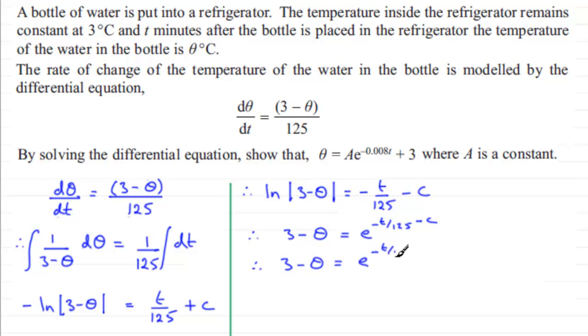And this is exactly the same as (3-θ) equals e to the power (minus t over 125) times e to the power minus c. Remember you would add your indices here when you're multiplying, and that would give me this result up here. Now I can see that I'm getting very close to the answer that we've got to show here, so it just needs a bit of rearranging.